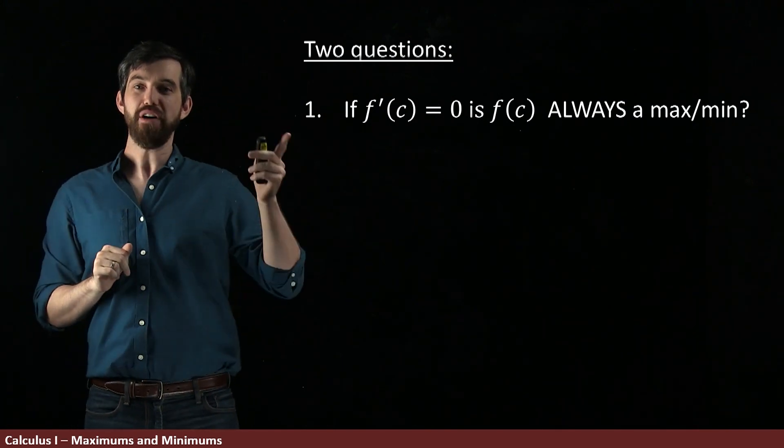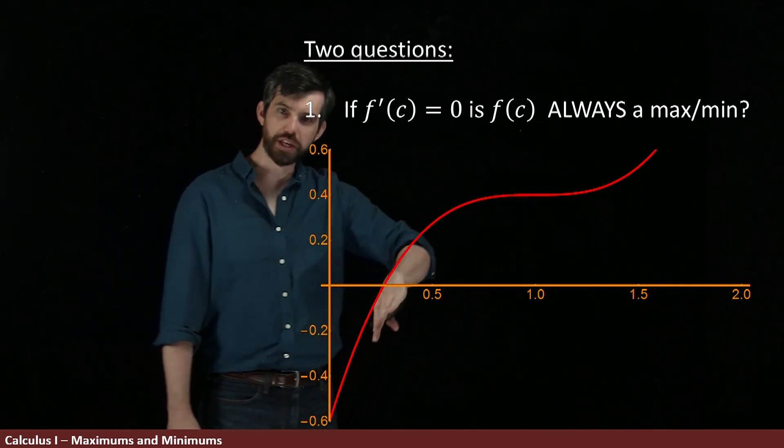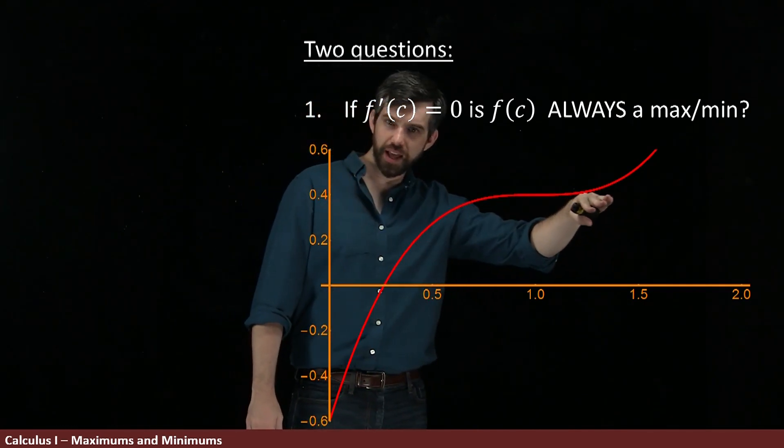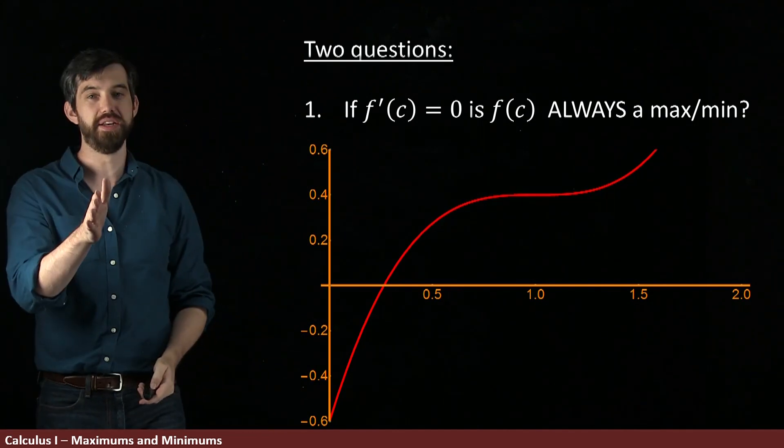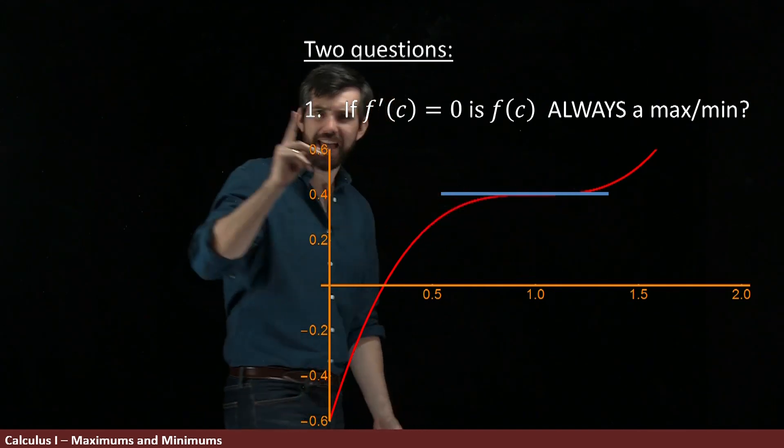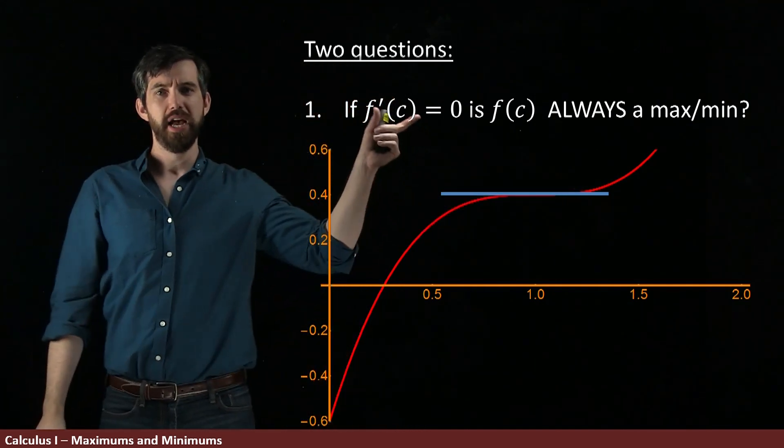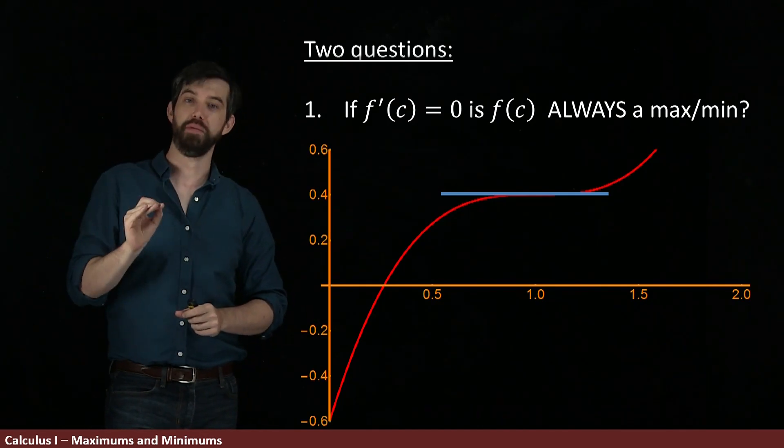Consider the graph of something like a cubic. Notice how it goes up, and then it flattens out, and then it carries on going up. And indeed, if I look at this point of x equal to one and I try to draw the tangent line, it is horizontal there. In other words, the derivative is equal to zero, and yet that's not a maximum or a minimum.